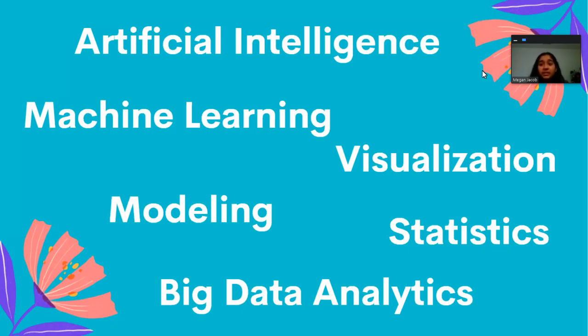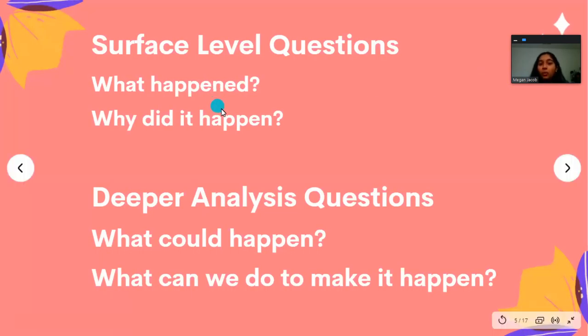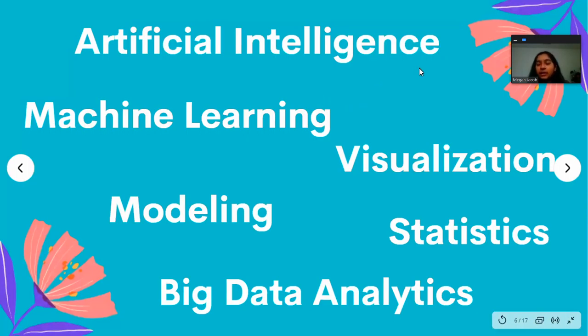And visualization and statistics are also just ways to, we're also going back to answer these questions, right? Like what happened and why did that happen? I would say visualization is a really good way of seeing that. And machine learning, artificial intelligence, they're really good for predictive methods as well. So all of these words are just ways that we harness data science in our society, because data science is really, really broad.